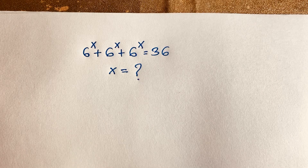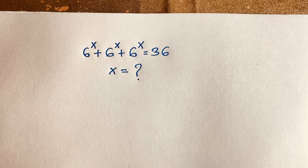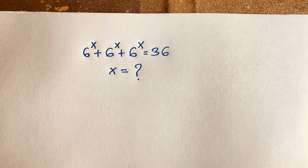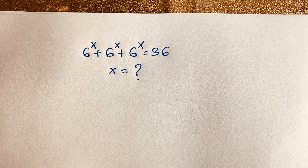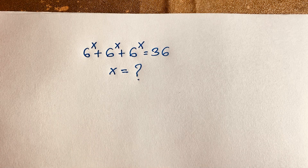Hello everyone. In this video, we have solved this interesting junior master Olympiad question. It is a nice exponential equation: 6 to the power x plus 6 to the power x plus 6 to the power x is equal to 36. We have found out what is the value of x in this exponential expression.